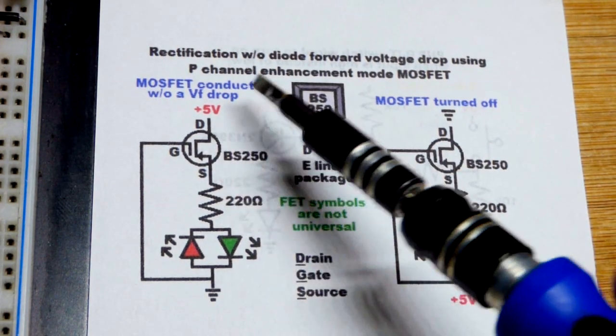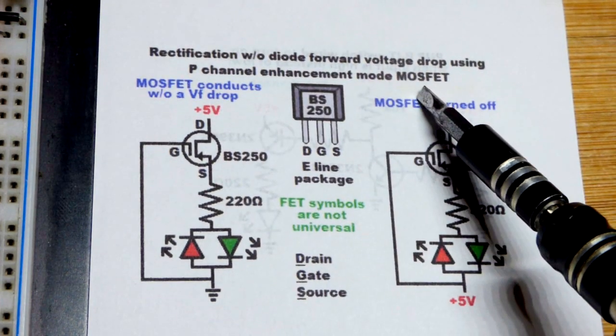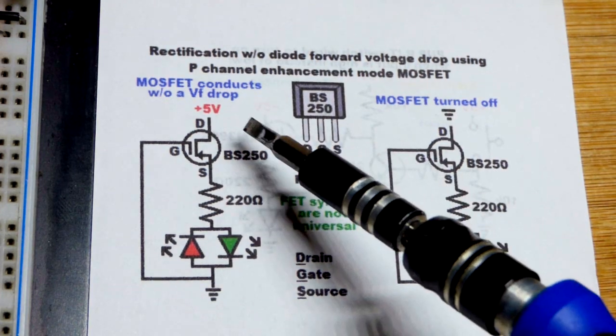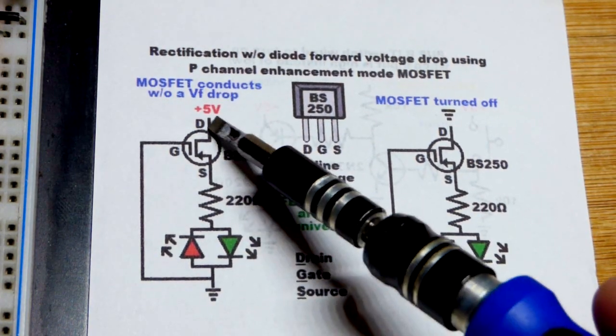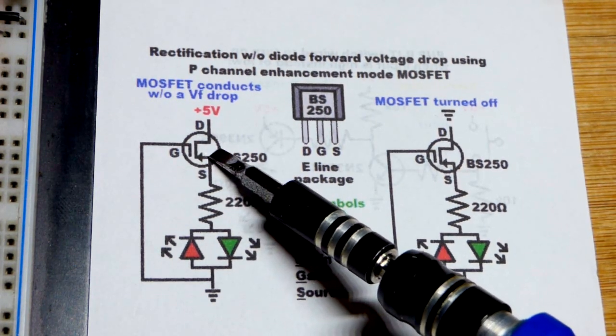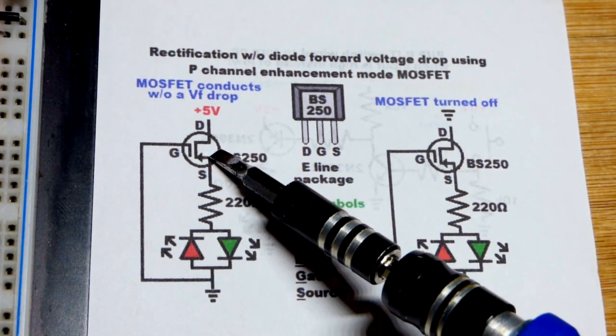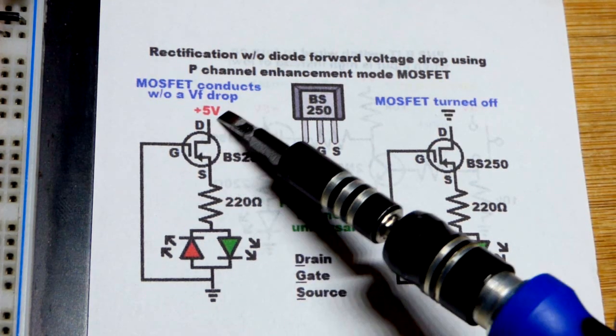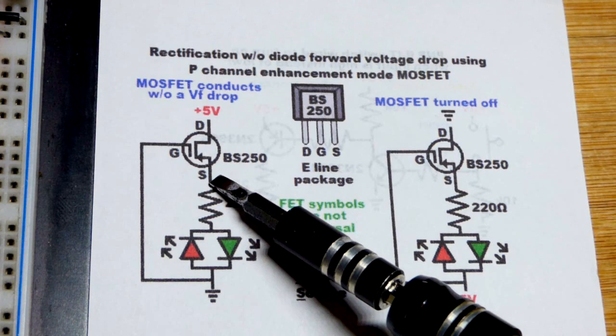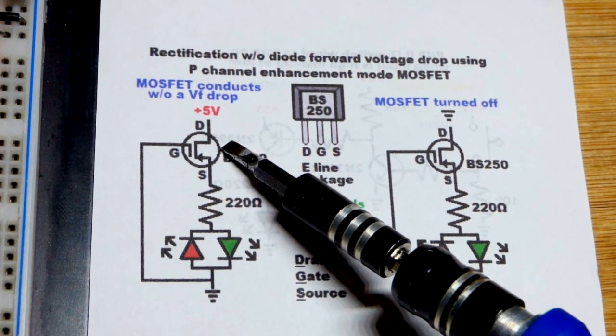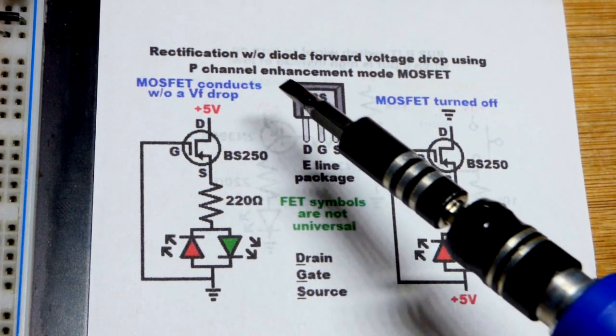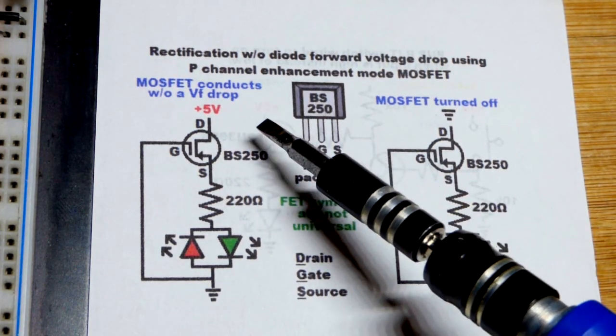The nice thing about using this P-channel enhancement mode MOSFET, we're going to use the BS250, is that it doesn't have a forward voltage. When it's conducting it doesn't have a voltage that it drops. It's not a perfect conductor, it will provide a little bit of resistance even while it's conducting as good as it can in the circuit. So a tiny bit of voltage will build up across it but it doesn't really have a voltage drop and it doesn't build up near as much voltage as most diodes.